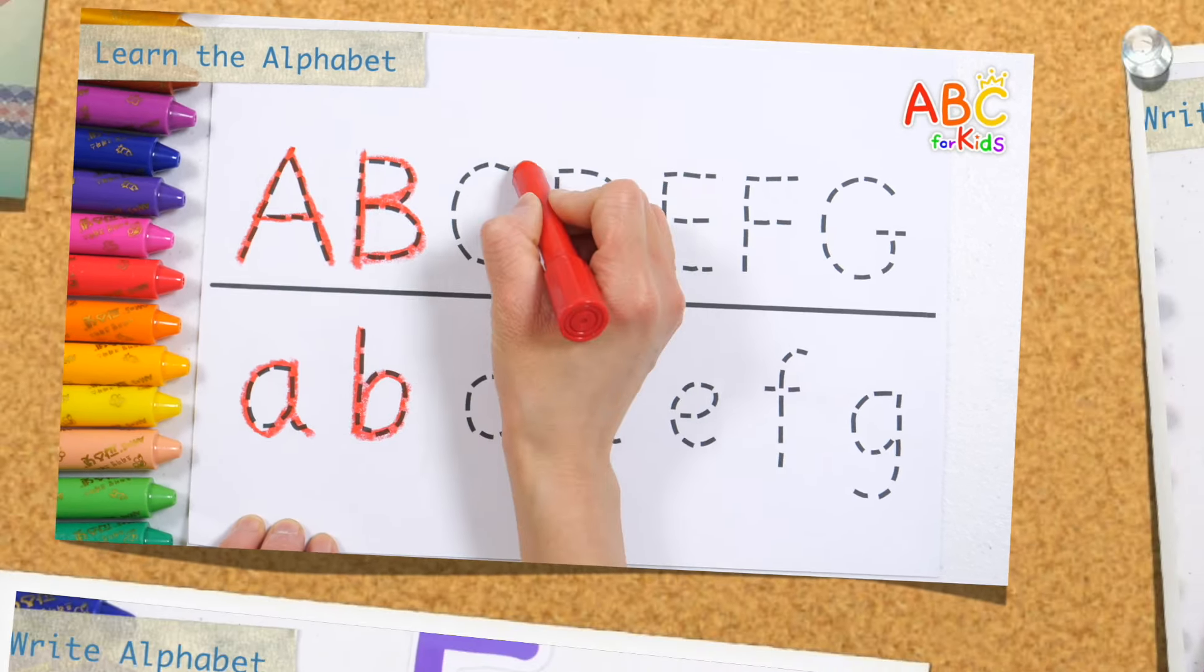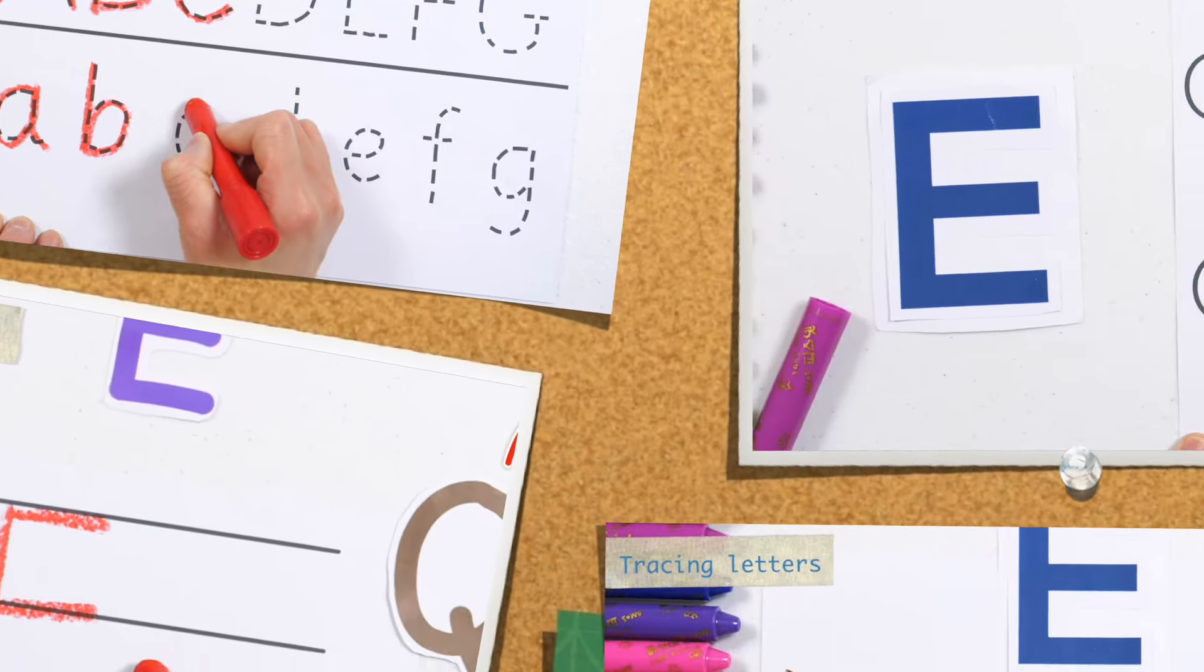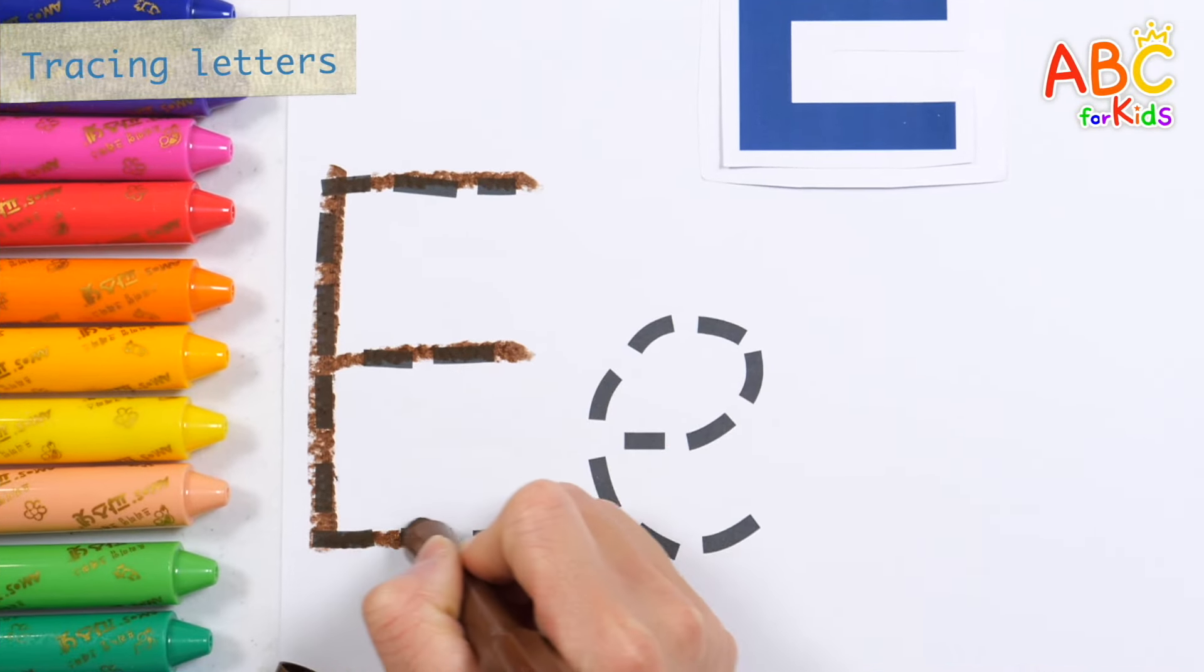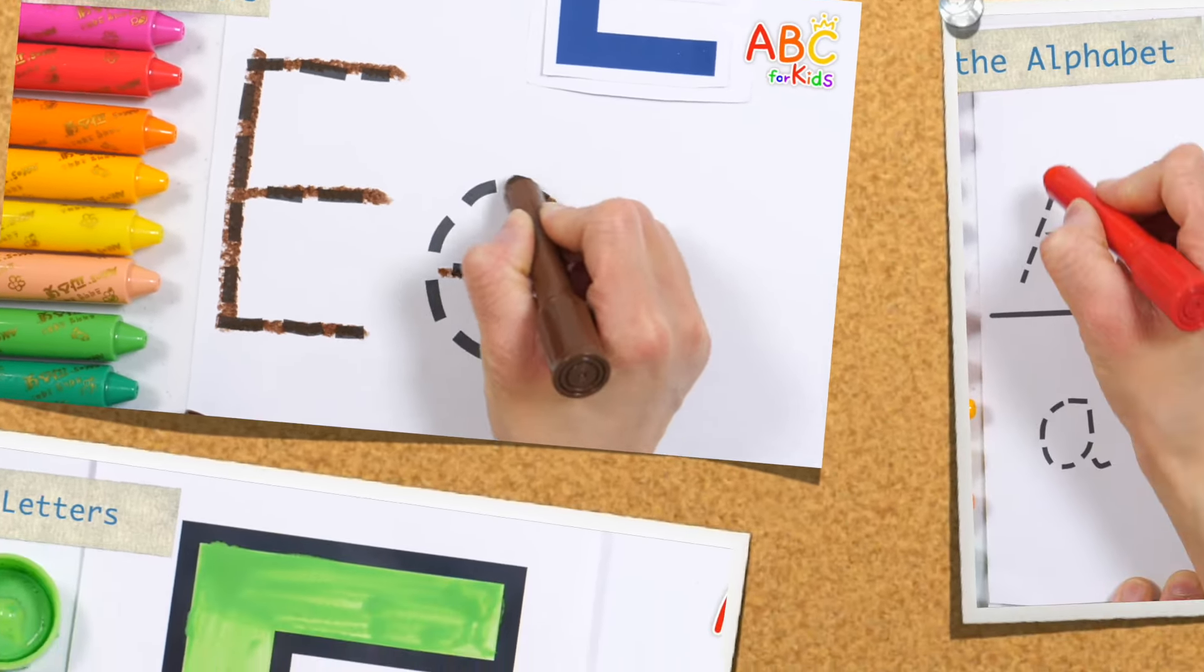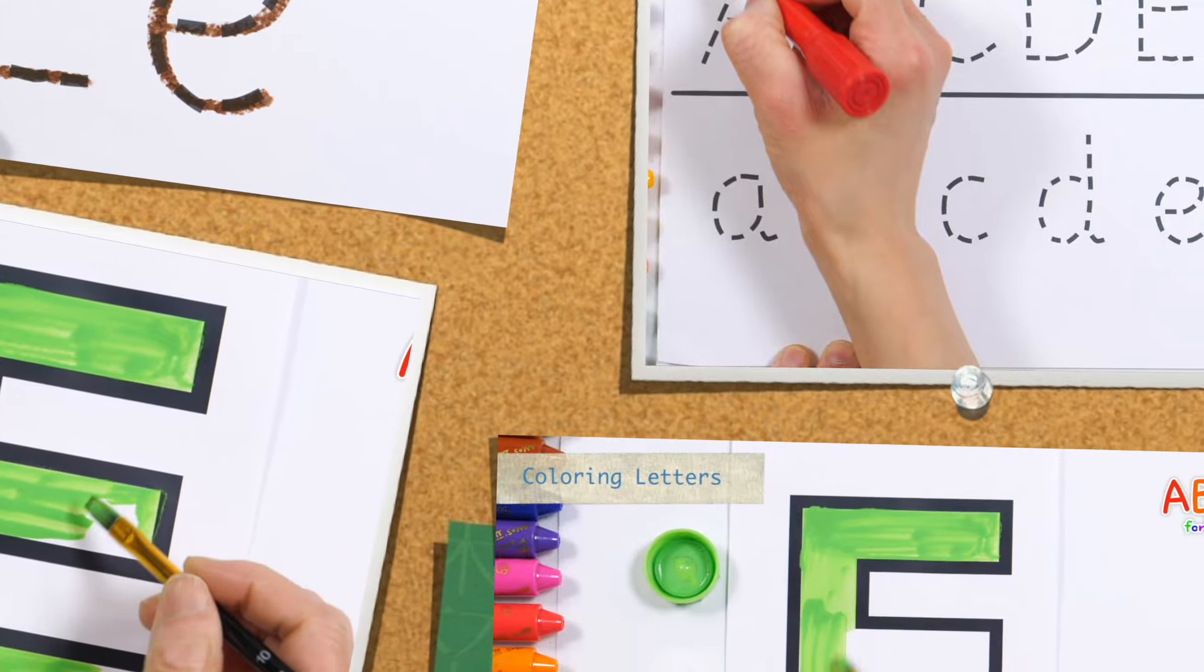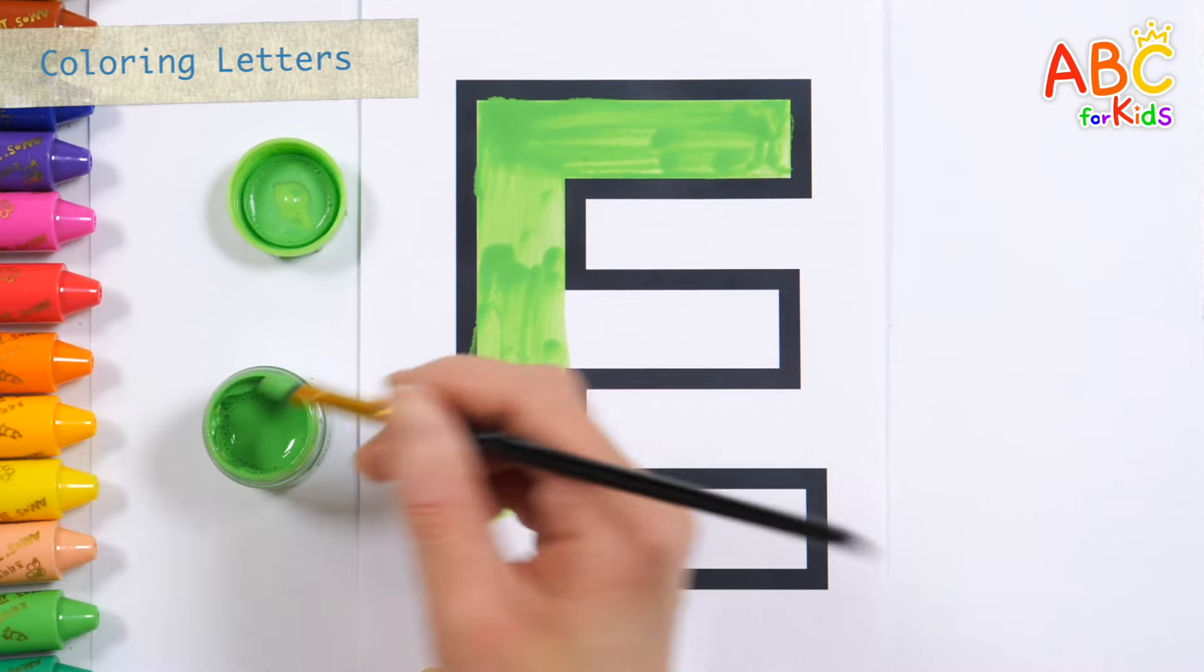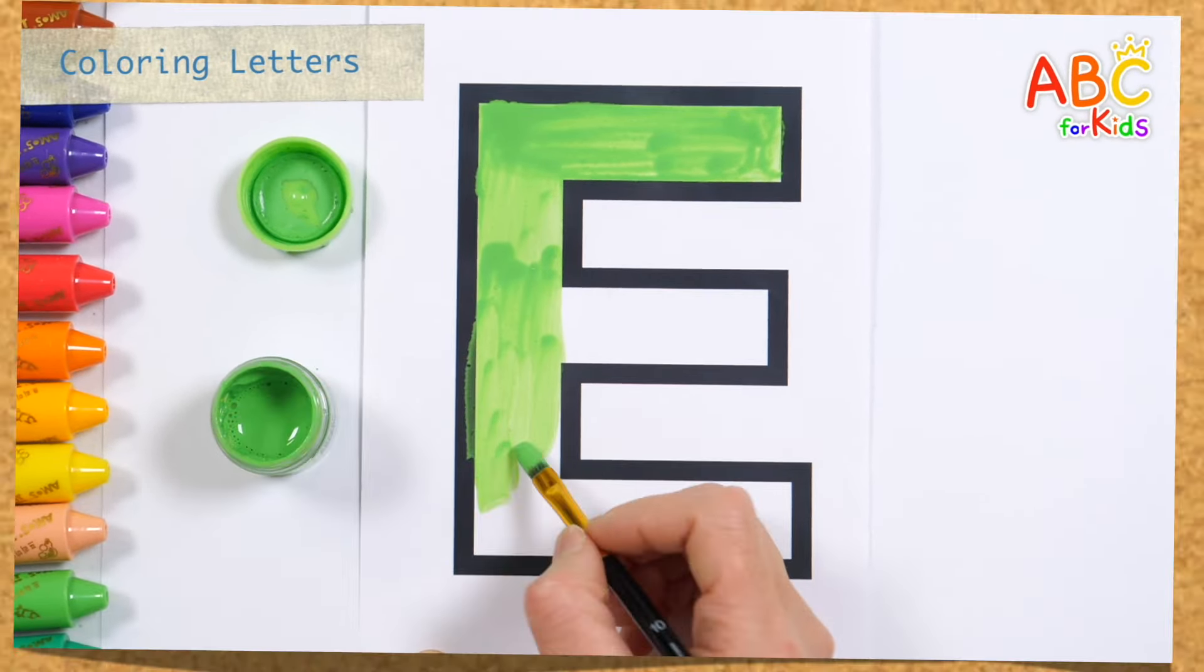Today, we will learn more about the letter E of the alphabet. This video was created to help children become familiar with the alphabet by repeatedly writing and reading the letter E. In addition, it was designed so that children can become interested in learning by coloring it with paints.